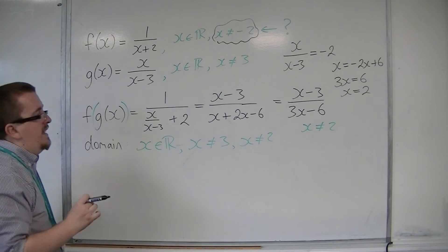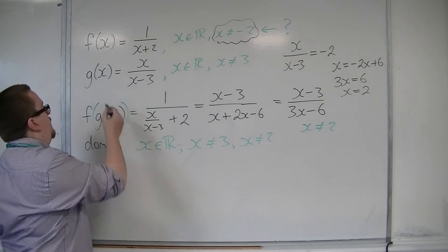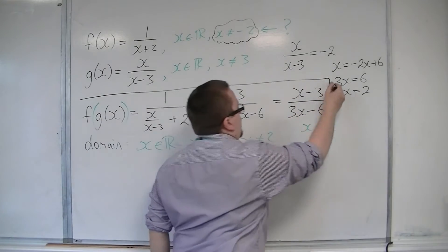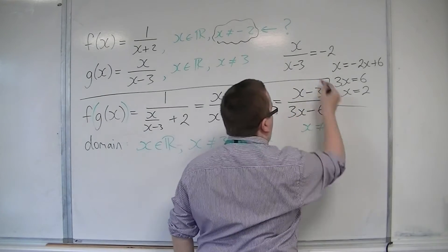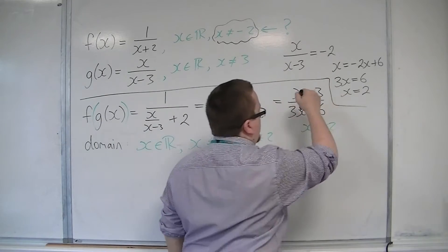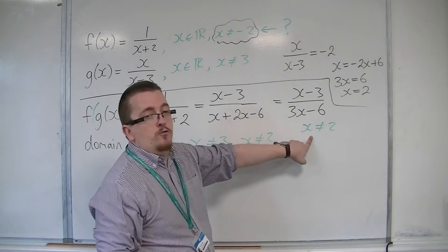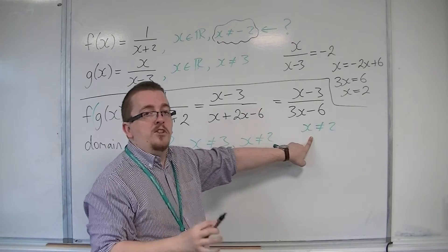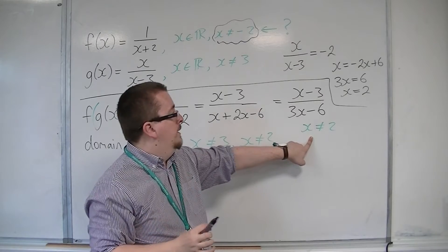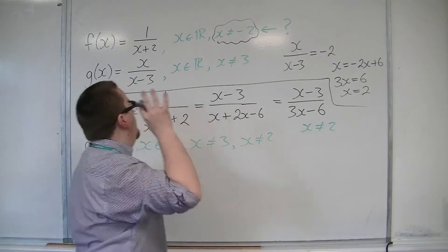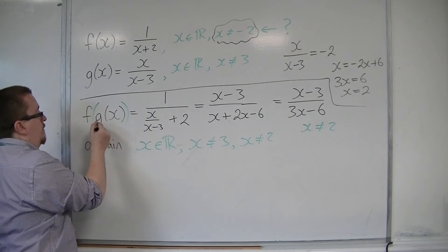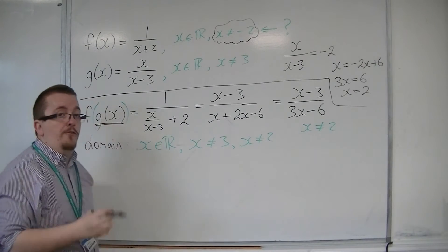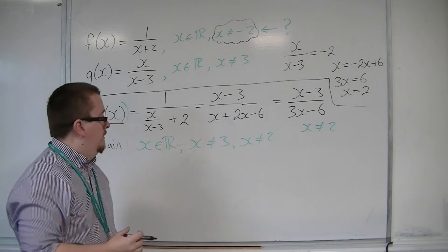So what we need to see here is that f of g of x can be written down, and from it we're getting the restriction that x is not allowed to be 2. And we've got the initial restriction from g of x being first, that x is not equal to 3.